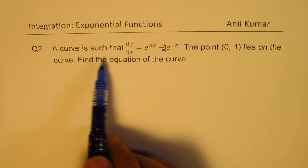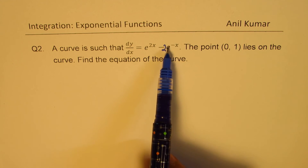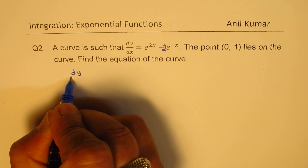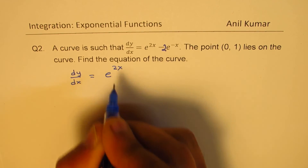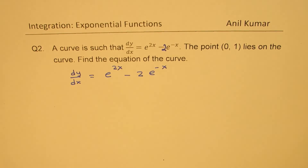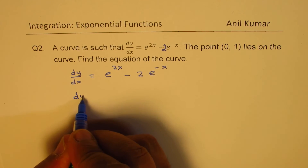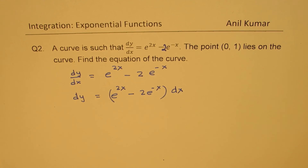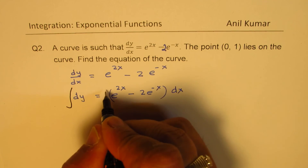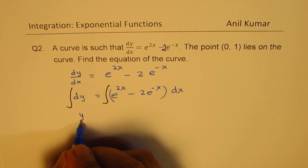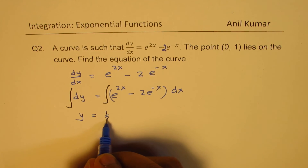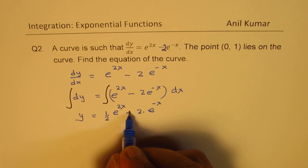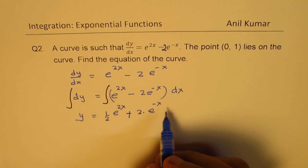Question number 2: a curve is such that dy/dx equals e to the power of 2x minus 2 e to the power of minus x. The point (0, 1) lies on the curve. Find the equation of the curve. We are given dy/dx, so we integrate both sides: y equals the integral of e to the power of 2x minus 2 e to the power of minus x dx, giving y equals half e to the power of 2x plus 2 e to the power of minus x, plus constant C.